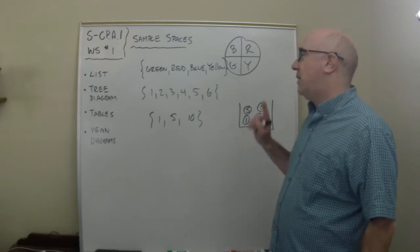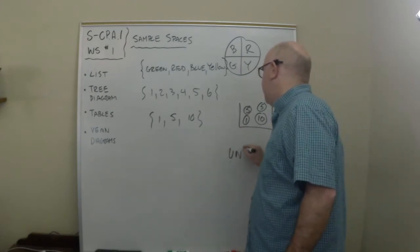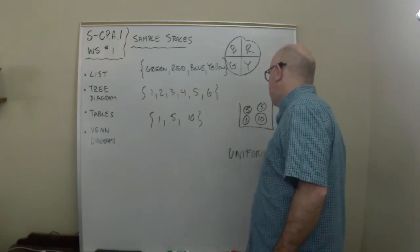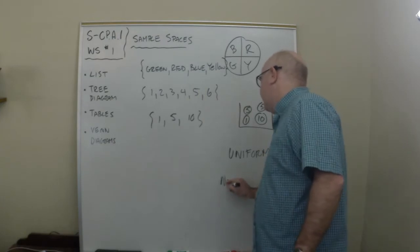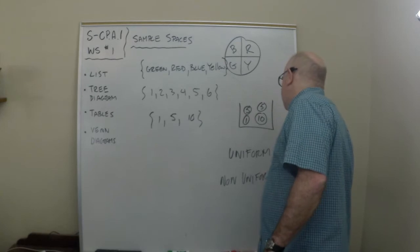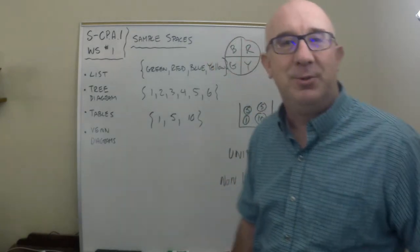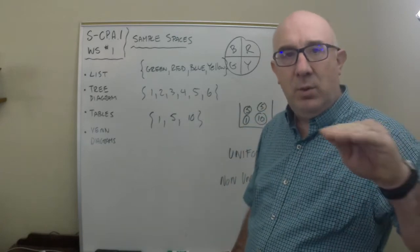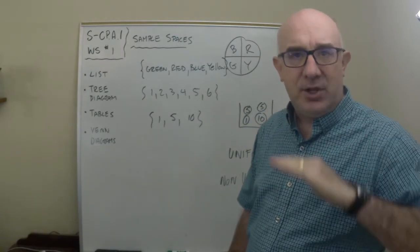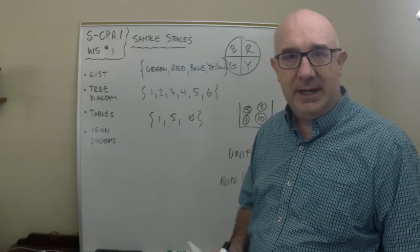Now this is where a good time to discuss another set of words. Uniform probability and non-uniform probability. Now uniform implies what we would expect that word to imply. Equal or everybody's got the same chance. It's everybody has a uniform. Everybody is the same as everybody else.